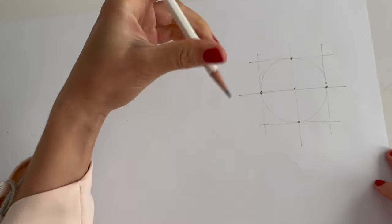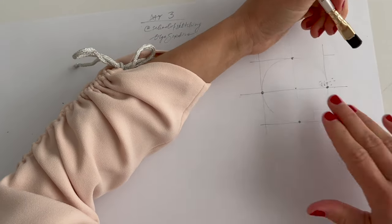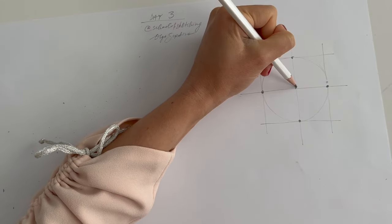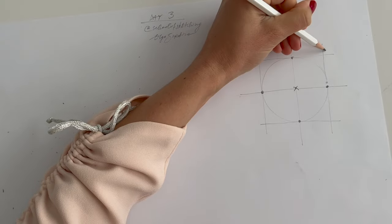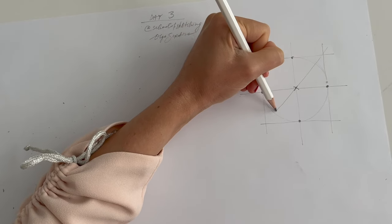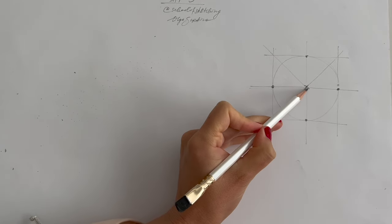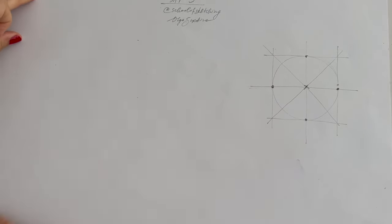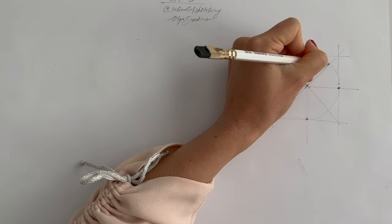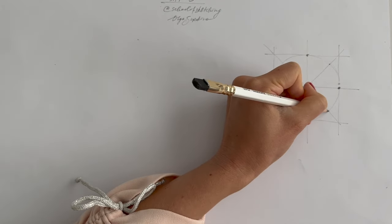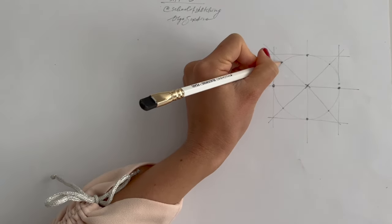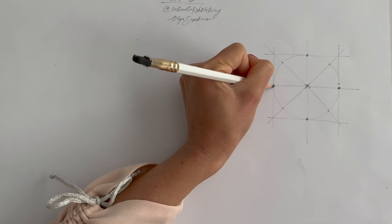Let's erase unnecessary lines. And through this center point, the last thing that we will do, we draw two diagonals. Basically, all that gives us some extra guidelines.